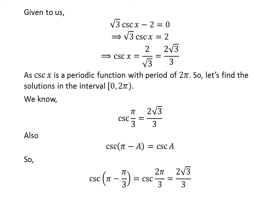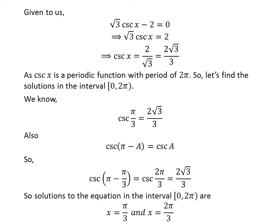Applying the above identity, cosecant of pi minus pi upon 3 is equal to 2 times square root of 3 upon 3. This implies cosecant of 2 times pi upon 3 is equal to 2 times square root of 3 upon 3. So the solutions in the interval 0 to 2 times pi are pi upon 3 and 2 times pi upon 3.